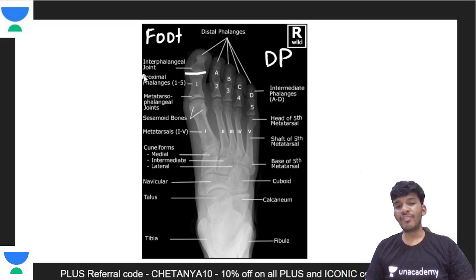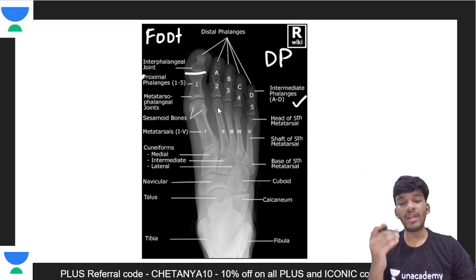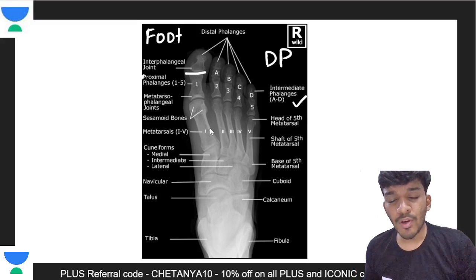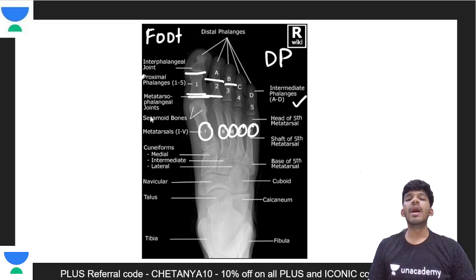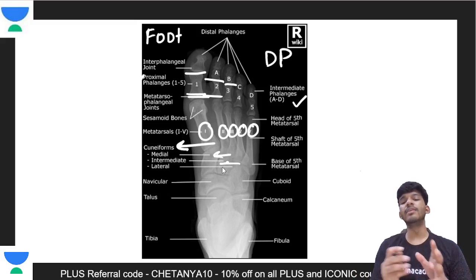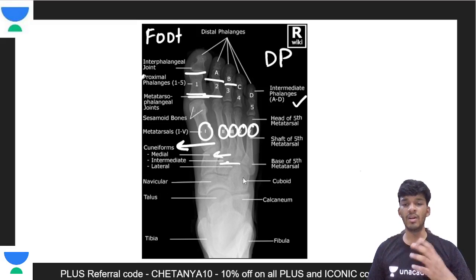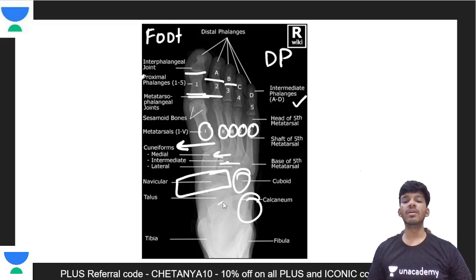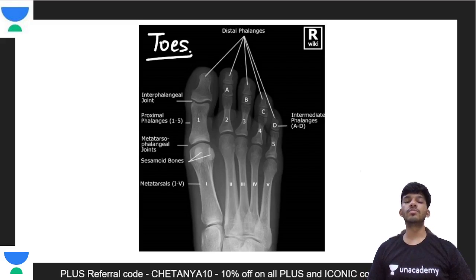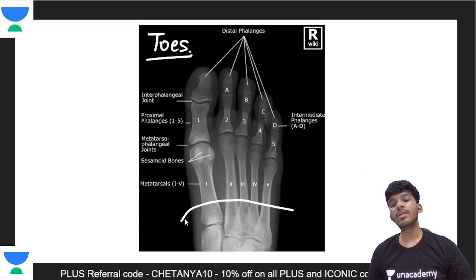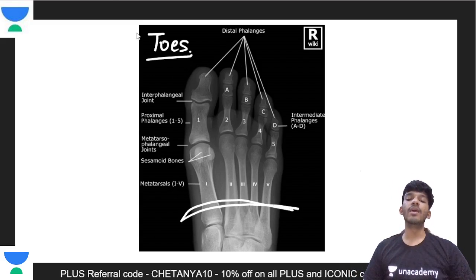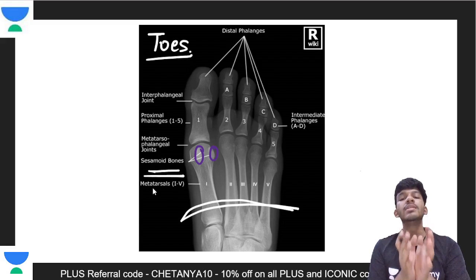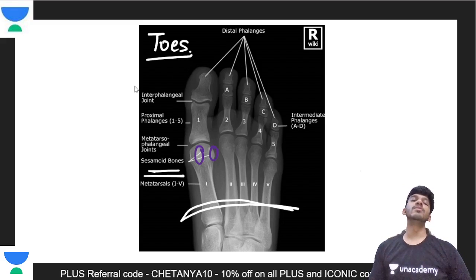The interphalangeal joints, intermediate phalanges, metatarsophalangeal joints — you should be able to identify the first, second, third, fourth, and fifth metatarsals. These are the metatarsals, and here are the phalanges. Apart from that, here you have the cuneiforms — most medial, then intermediate, then lateral cuneiforms. Along with that, here you have the cuboid and the calcaneum, and on this side you have the navicular, the talus, and the upper tibia and fibula. In this particular x-ray, the slightly higher density near the first metatarsal represents sesamoid bones.